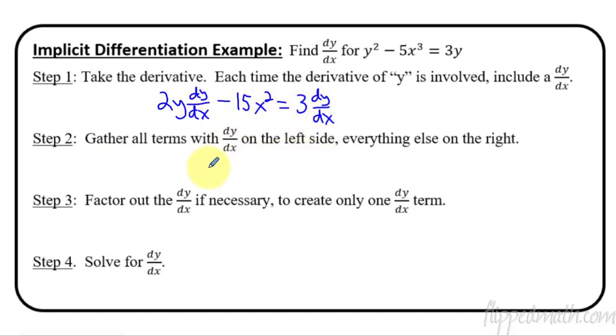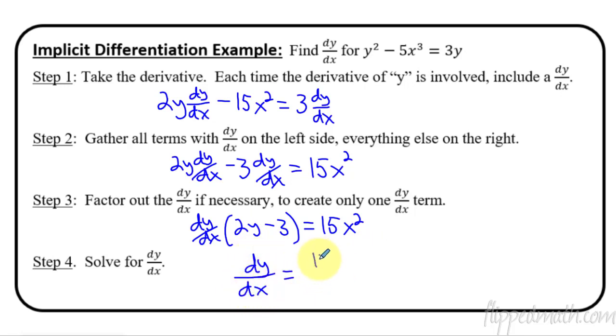So get all the dy dx's on the same side. I said left side. It doesn't matter if it's left or right. Just get them on the same side. So these two terms, that term and this term, I'll say 2y dy dx, and then subtract this one over, minus 3 dy dx is going to equal, and now this term doesn't have a dy dx, so I'll add it to the other side and give myself a 15x squared. Now that we have dy dx's all on one side, we can factor it out if necessary. Sometimes there's only one dy dx, so this is a lot easier. But in this case, we'll factor out the dy dx, and then that gives us 2y minus 3 equals 15x squared. And then the last thing is solve for dy dx by dividing both sides by what's in parentheses there. So my dy dx for this example is equal to 15x squared all over 2y minus 3.